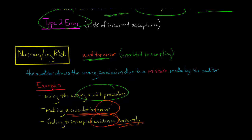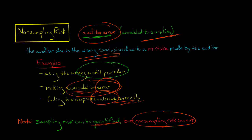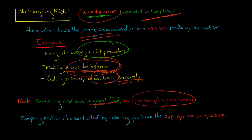There could be any number of reasons where the auditor makes a mistake that has nothing to do with the sampling at all, and the auditor ends up drawing the wrong conclusion. Now, sampling risk you can actually quantify using probability. You can understand what your sampling risk is. But non-sampling risk, due to its nature, you can't have any idea of how many calculation errors are going to be made or whether people are going to interpret evidence correctly.